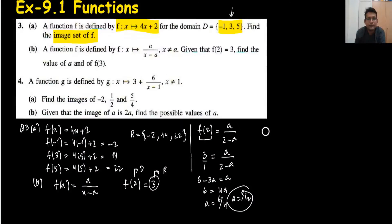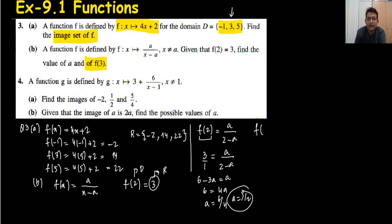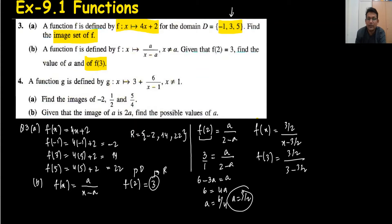We have one more part here: we need to find f(3). So f(3) means when we got the value of a = 3/2, we write 3/2 upon x — with x = 3, it's 3 minus 3/2 upon 3 minus 3/2. You can write 1.5 divided by 1.5, so it's coming 1.